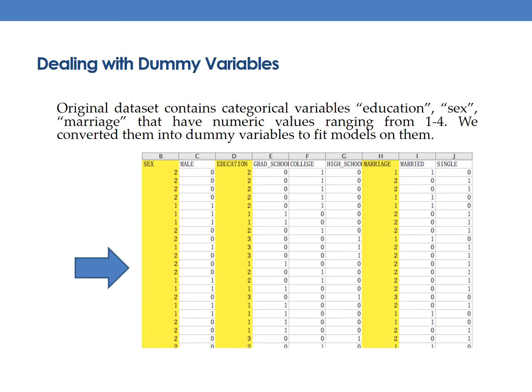From the data side, we have some categorical variables with numeric values. For example, in feature marriage, one stands for married, two stands for single, three stands for others. Since we can't process this kind of categorical variables in our machine learning models, we converted them into n-1 dummy variables. For example, we converted the marriage feature into two dummy variables, married and single.